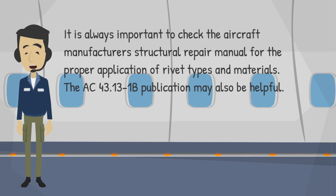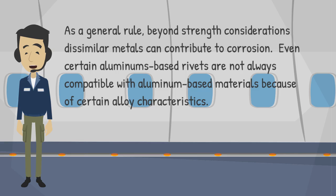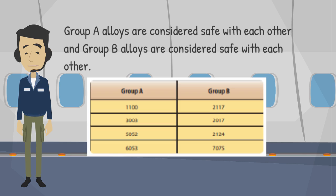The AC 43.13-1B publication may also be helpful. As a general rule, beyond strength considerations, dissimilar metals can contribute to corrosion. Even certain aluminum-based rivets are not always compatible with aluminum-based materials because of certain alloy characteristics. Group A alloys are considered safe with each other, and Group B alloys are considered safe with each other.